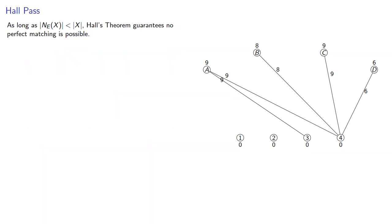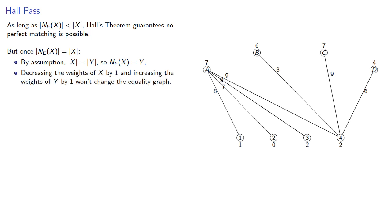Now, as long as the neighborhood of X is smaller than X itself, Hall's theorem guarantees no perfect matching is possible. But once the neighborhood of X is the same size as X, then since by assumption the size of X and Y are the same, the neighborhood of X includes all of Y. And decreasing the weights of X by 1 and increasing the weights of Y by 1 won't change the equality graph.